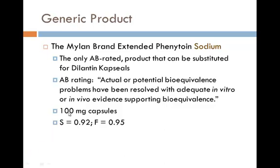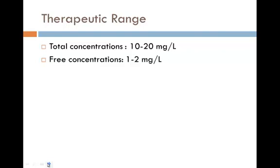These products come as 130mg capsules; the salt form factor is 0.92 and bioavailability is 0.95. The therapeutic range we're targeting for total phenytoin concentrations is between 10 and 20mg per liter. Phenytoin is about 90% bound, so if calculating free concentrations, we want the free concentration to be between 1 and 2mg per liter.